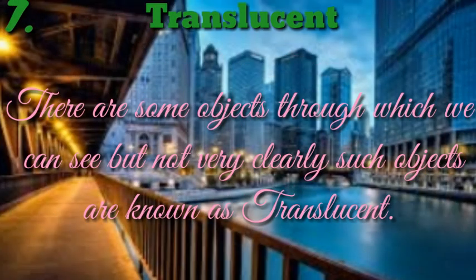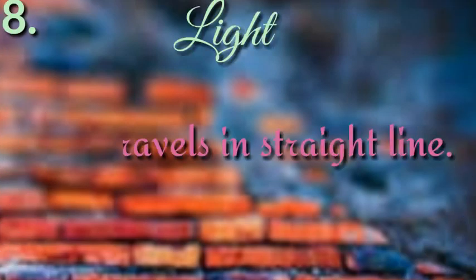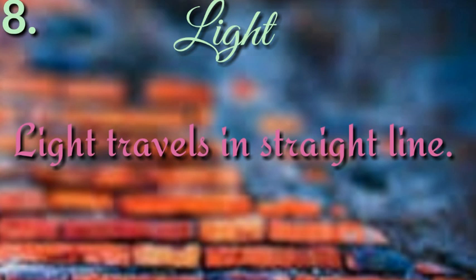Seventh, translucent. There are some objects through which we can see but not very clearly. Such objects are known as translucent. Eighth, light. Light travels in a straight line.